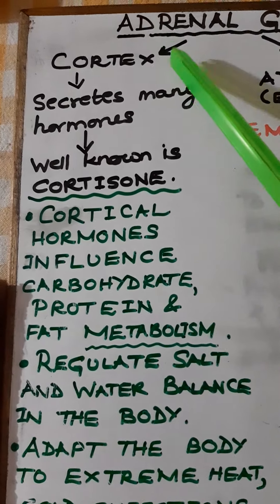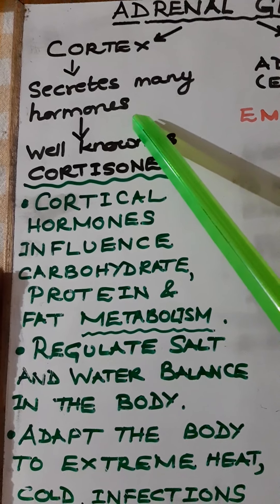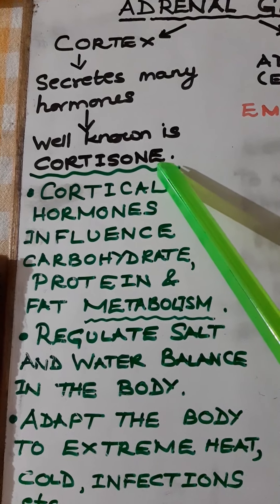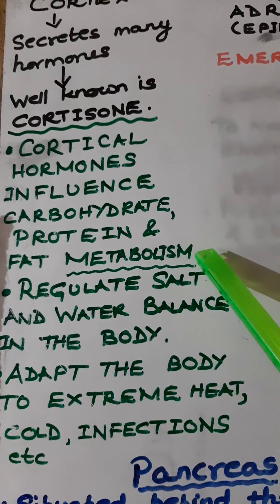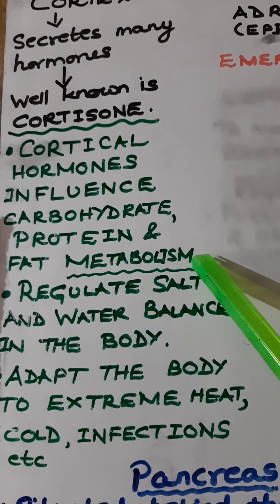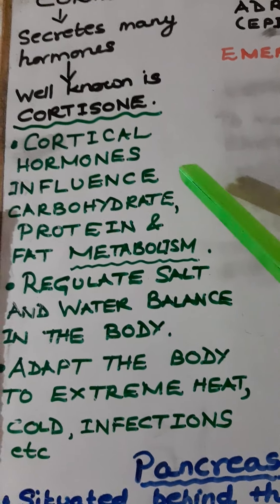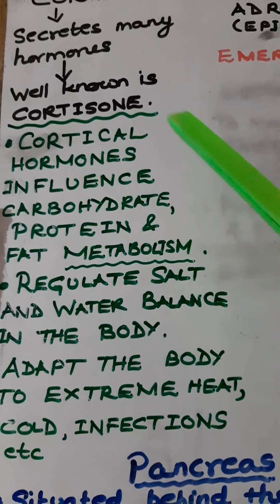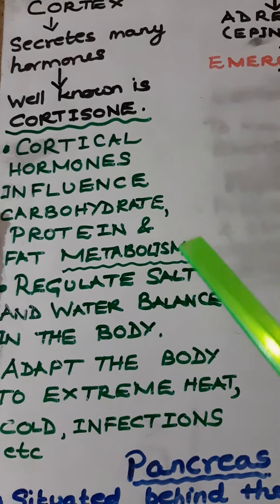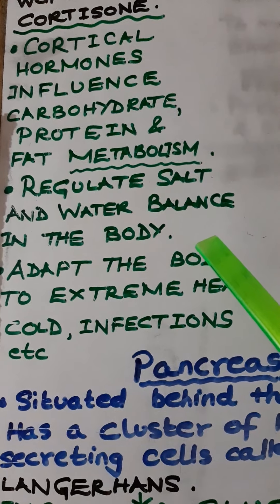The adrenal cortex secretes many hormones, but the most well-known one is cortisone, also called cortical hormones. They influence carbohydrate, protein, and fat metabolism — meaning the sum total of the chemical reactions going on in the body.